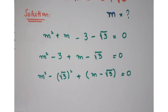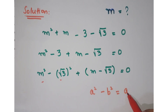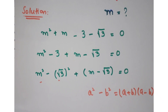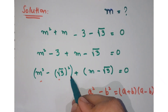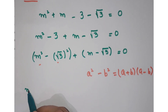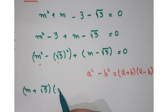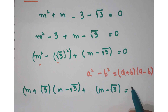Here you can apply the algebraic identity: a squared minus b squared can be written as a plus b into a minus b. Now just expand it. This part you can write as m plus under root 3 into m minus under root 3, plus m minus under root 3, equals 0.